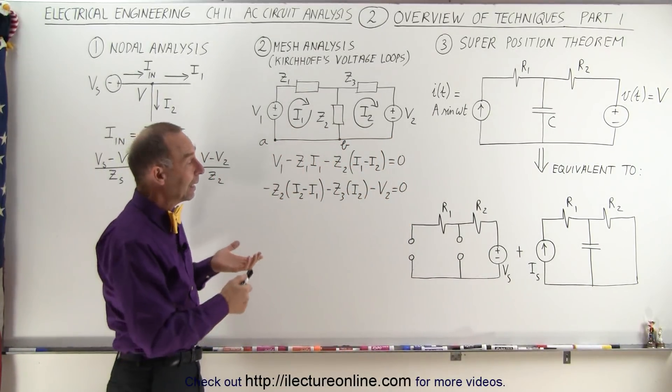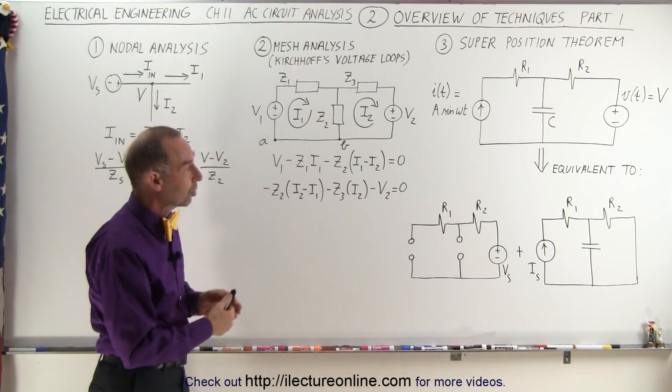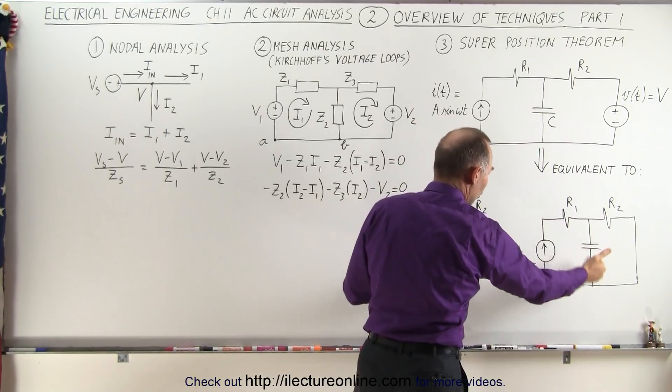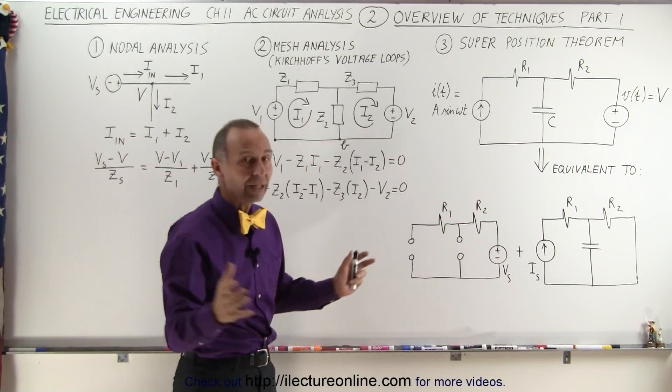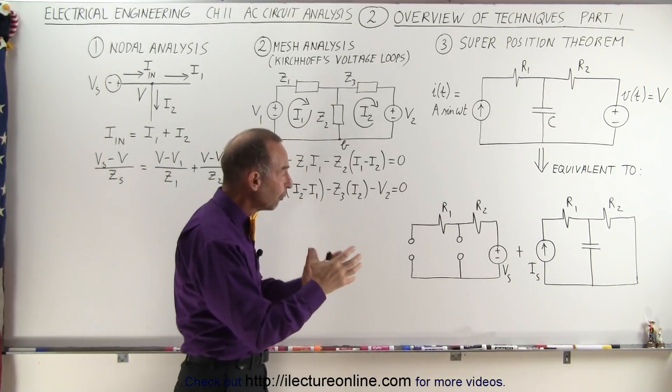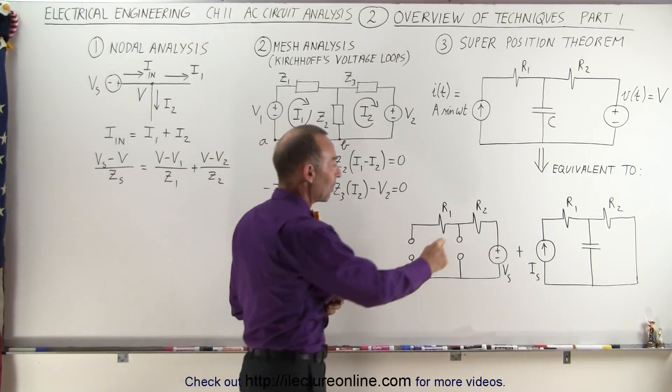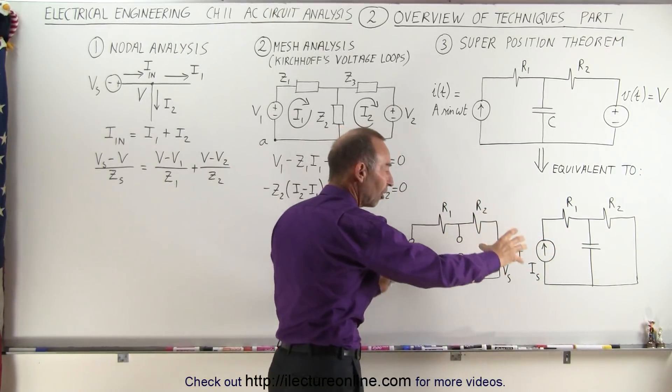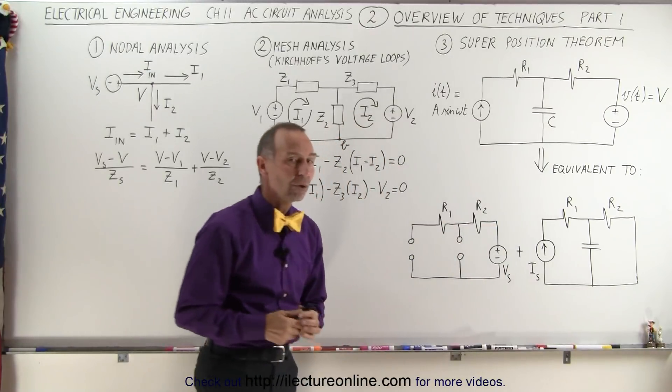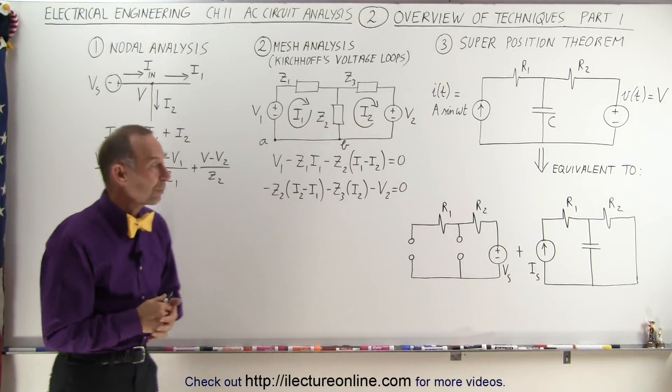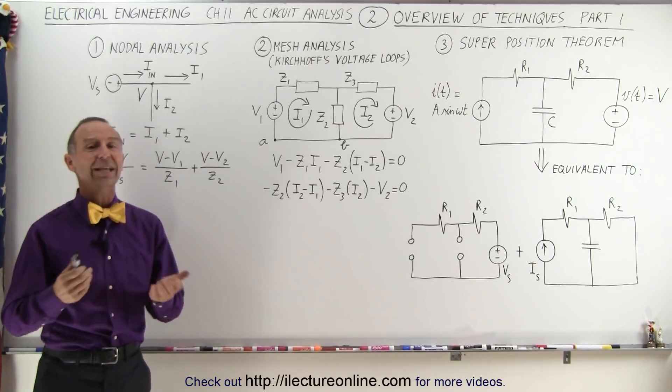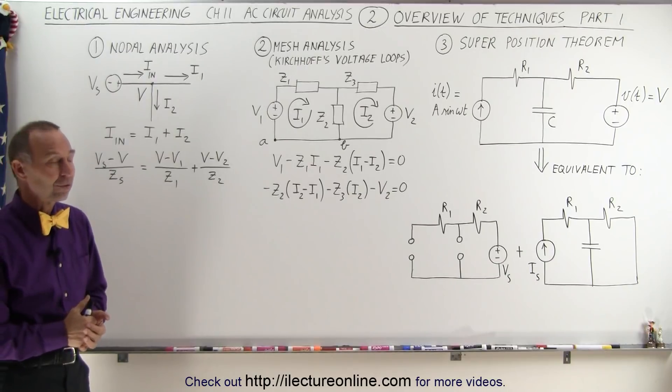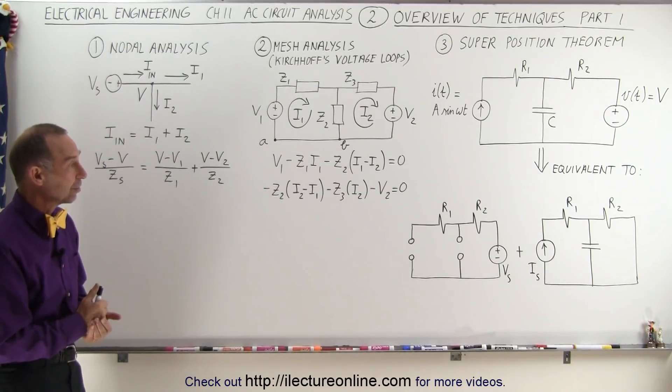It helps us find the currents in a circuit by sub-defining a circuit like this, which may be more complicated, into circuits which are much easier to solve. Then we simply add the results together, the voltages and the currents. For example, the voltage at the node and the currents to the circuit, you simply add them from the individual sub-circuits. That will give you the result of the original circuit. Those are the three first techniques. In the next video, we'll show you the next three techniques at the top level, before we delve into some really good examples.